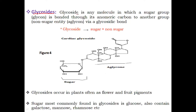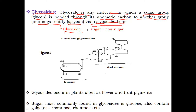Sugar acids are those molecules formed by the oxidation of carbon 1 or carbon 6 in monosaccharides. Next, the most important topic: glycosides. A glycoside is any molecule in which a sugar group — known as the glycon — is bonded through its anomeric carbon (carbon 1 for aldehyde group, carbon 2 for ketone group) to another non-sugar entity known as the aglycon, with the help of a glycosidic bond.